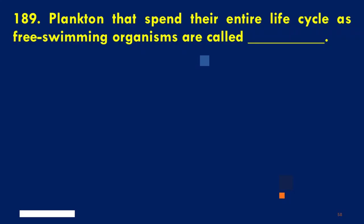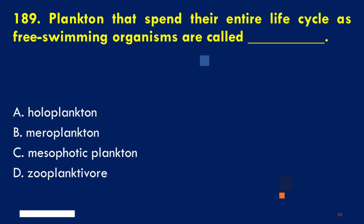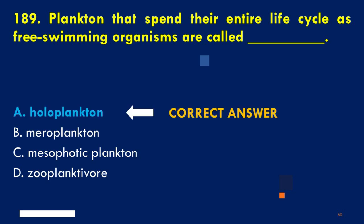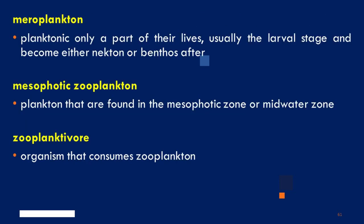Plankton that spend their entire life cycle as free-swimming organisms are called: A. Holoplankton, B. Meroplankton, C. Mesophotic plankton, D. Zooplanktivore. The correct answer is A. Holoplankton. Meroplankton are organisms that are planktonic only part of their lives, usually during the larval stage, and become either nekton or benthos after. Mesophotic zooplankton are plankton found in the mesophotic zone or mid-water zone. And zooplanktivores are organisms that eat or consume zooplankton.